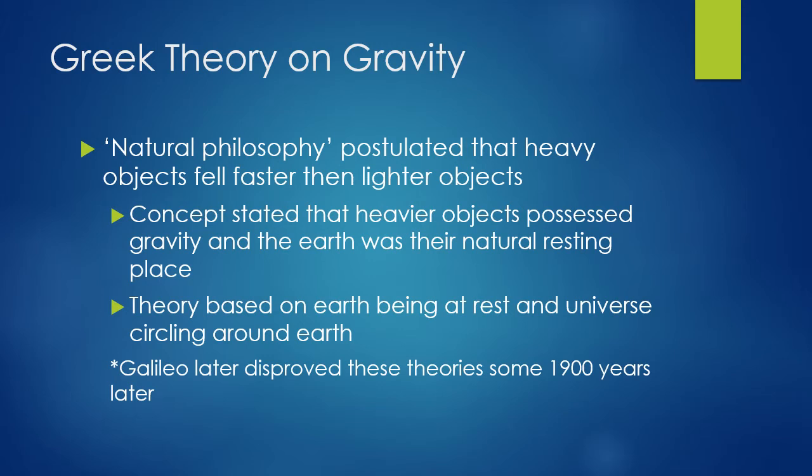Next, we're going to look at the Greek theory on gravity. Natural philosophy — what physics was called at the time — postulated that heavy objects fell faster than lighter objects. They believed this because they thought Earth was the center of everything and that heavier objects would naturally fall faster to their resting place. Galileo later disproved these theories some 1,900 years later.